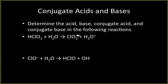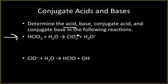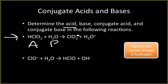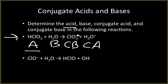Let's practice identifying acid, base, conjugate acid, and conjugate base. In the first equation, HClO2 donates the hydrogen — so it is the acid. H2O accepts it, making it the base. The species that accepted the hydrogen (H3O+) is our conjugate acid, and the species that lost the hydrogen (ClO2-) is our conjugate base.